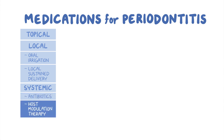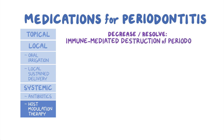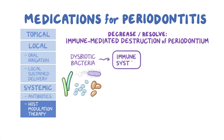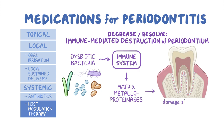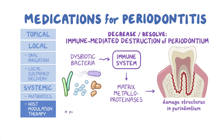We can also use host modulation therapy to help decrease or resolve the immune-mediated destruction of the periodontium. This destruction occurs because dysbiotic bacteria trigger the host's immune system to produce enzymes called matrix metalloproteinases, among other molecules, which can damage the supporting structures in the periodontium. Host modulation therapy is generally reserved for individuals who don't respond well to conventional mechanical therapy.